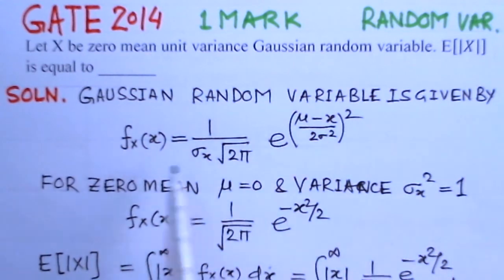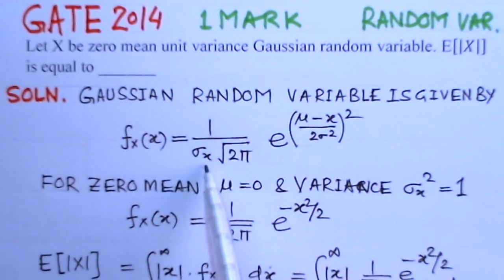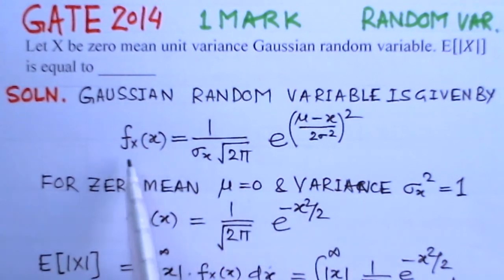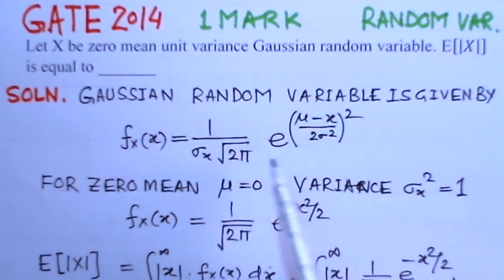So Gaussian random variable is given by fx. This is the distribution: 1 over sigma x root 2 pi, e to the power minus mu minus x over 2 sigma square whole squared. This is the Gaussian distribution. This is the variance and this is the mean.